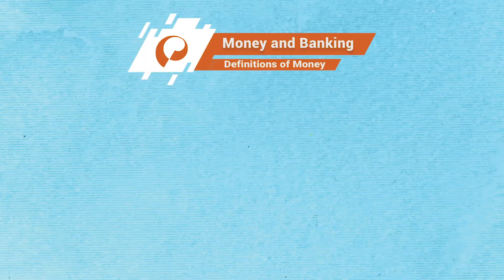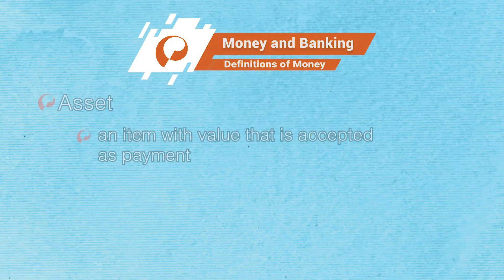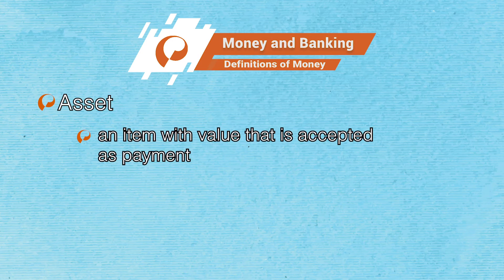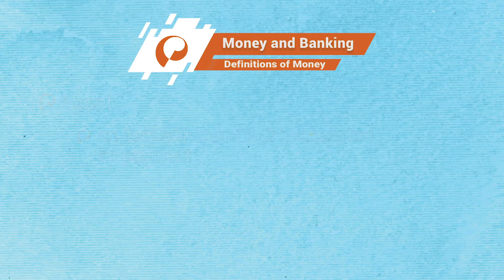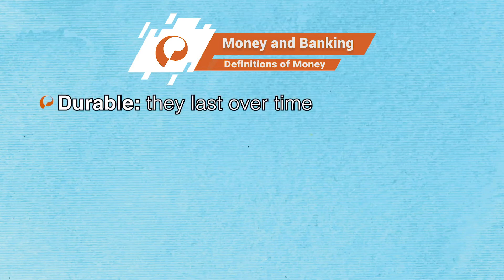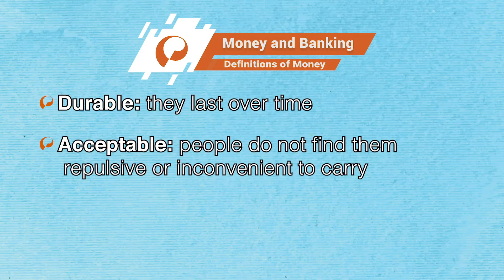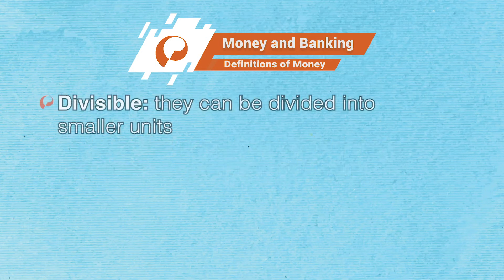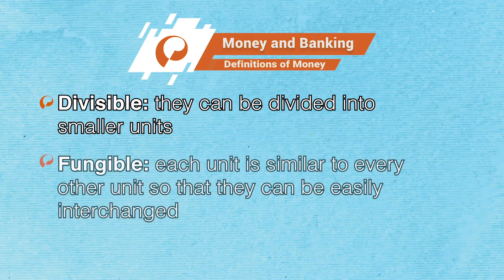Let's start by defining the concept of money. Money is an asset, a durable item with value that is widely accepted as a means of payment. Only some valuables or assets can be used as money. Assets that can be used as money are durable — they last over time — acceptable, meaning people do not find them repulsive or inconvenient to carry, divisible — they can be divided into smaller units — and fungible, meaning each unit is similar to every other unit so that they can be easily interchanged.